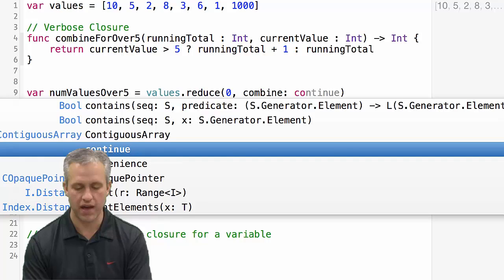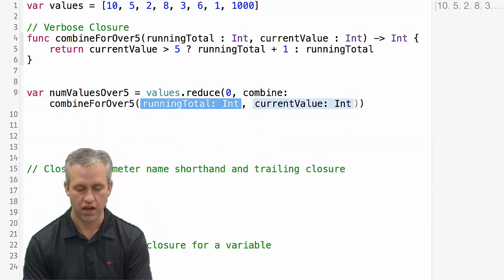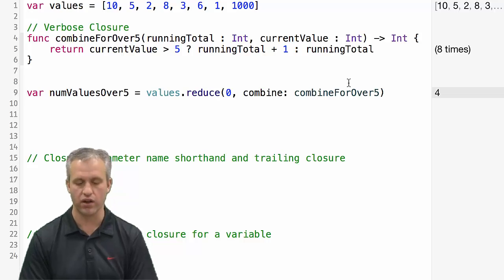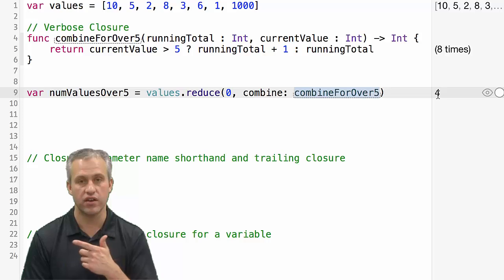And what we can do is we can actually just pass this function in. Now we're not calling the function, we're just passing the function in. So the way it looks is you just pass it in with no parameters. And you can see that it got four.